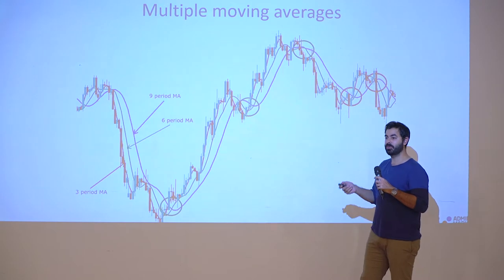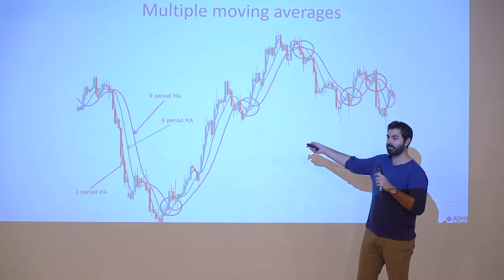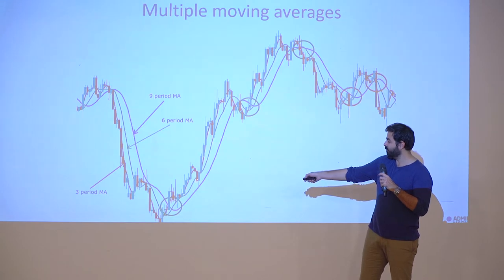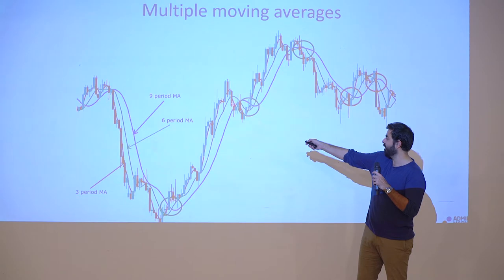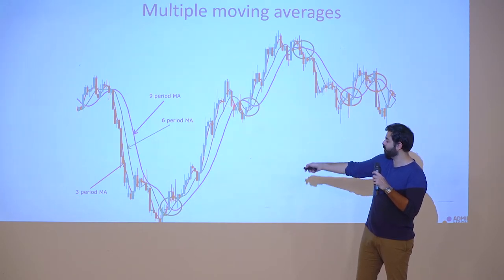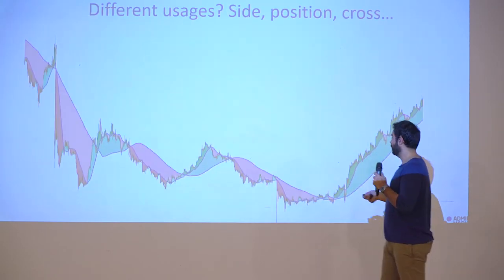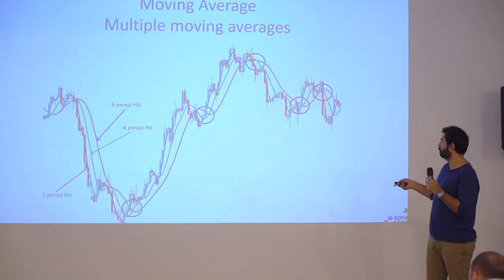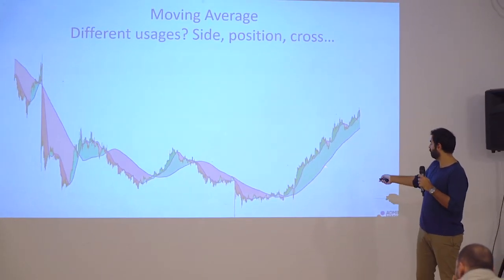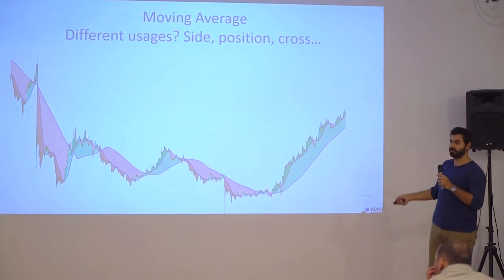Remember one of the things I told you: you can't trade the same way at the beginning of a trend and at the end of a trend. If you are successful trying to buy here, you have more chance to win than if you try to buy here. This is why, if you buy here, you're going to lose, while if you buy here, you're going to win.